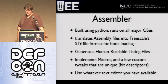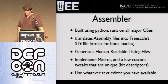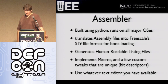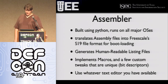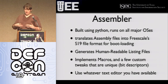The assembler we have written is written in Python and you can download it off the website. It's on the conference CD. You just run the Python file with an ASM file, which is just assembly instructions, and it generates the S19, which is the binary that you upload to the board. The assembler also spits out what's called the listing file, which is the assembled binary right next to the code so you can see what it looks like.